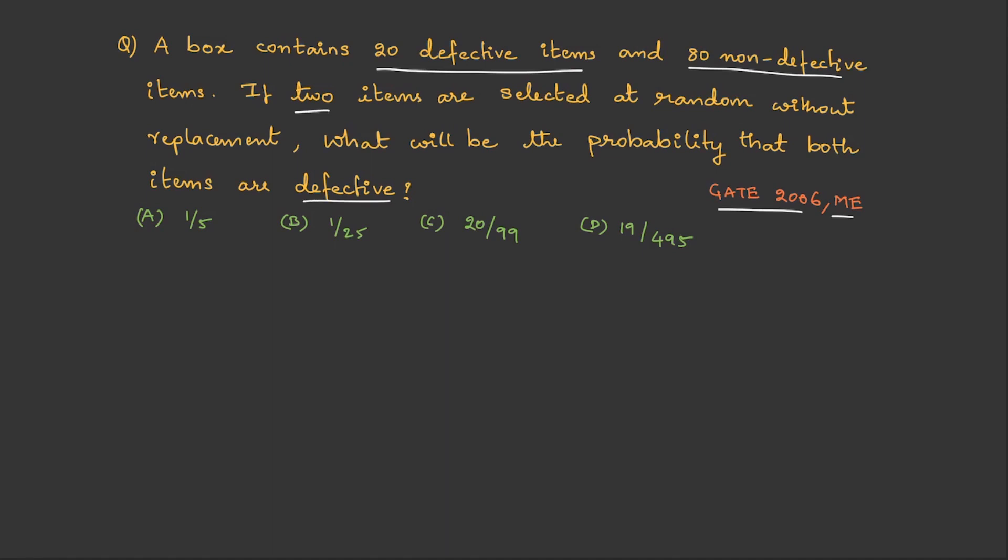Now, in the question, you can easily figure out they are trying to talk about two different categories: defective, non-defective. And secondly, they said it is without replacement. Before we solve the question, let us try to draw the diagram.